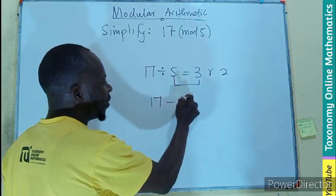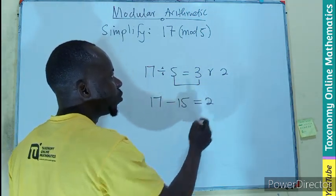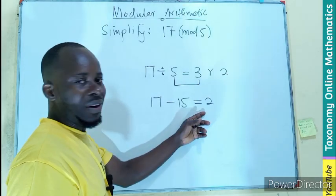So 17 minus 15 give us what? 2. So this is the remainder.